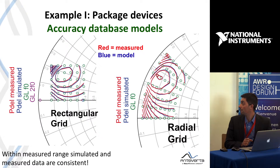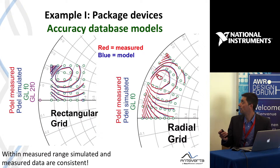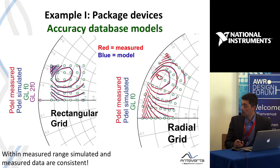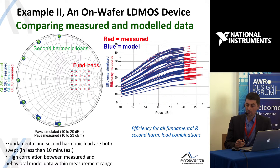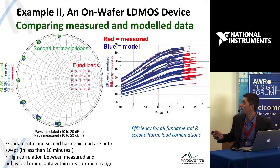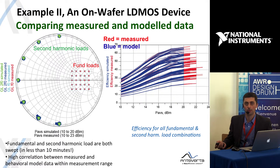Here are some examples comparing measured and model data for different types of devices and load-pull sweeps. For a packaged device — an LDMOS in this case — you can see a comparison between measured data in red and the model in blue in terms of output power for two different grids. Another on-wafer example shows a sweep of both fundamental and harmonic loading, comparing efficiency simulated in blue and measured in red. A measurement like this would take less than 10 minutes.